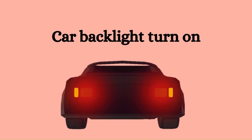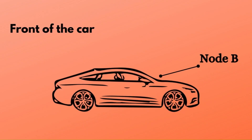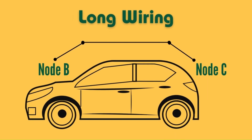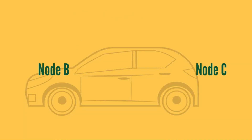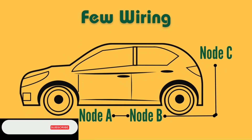Since the car's backlight is at the back, node C is at the back and node B is at the front, so we also need to connect node C and node A. Wiring to connect node B and node C would require running wire from the front to the back, whereas if node B is at the center of the car, connecting node A and node C would be comparatively easier and fewer wires would be used.